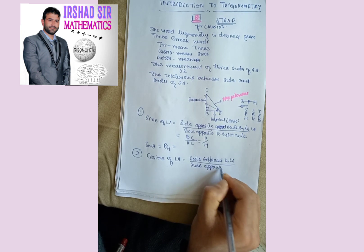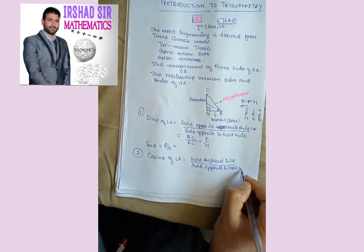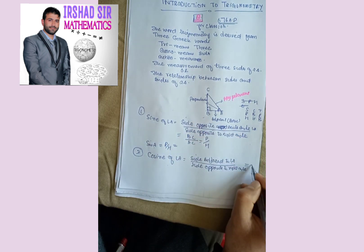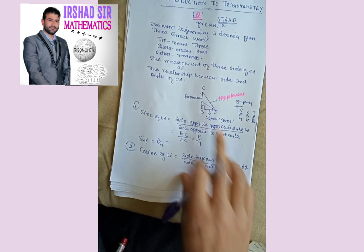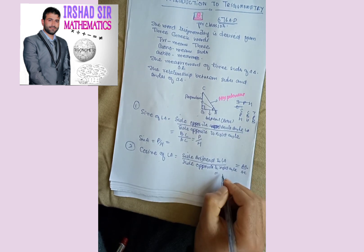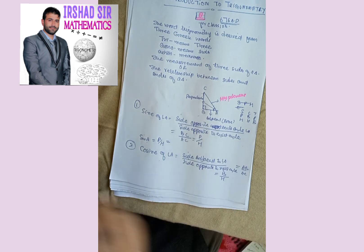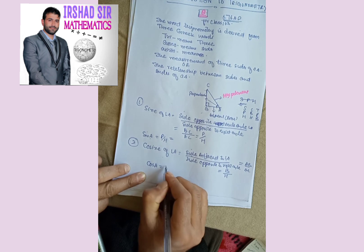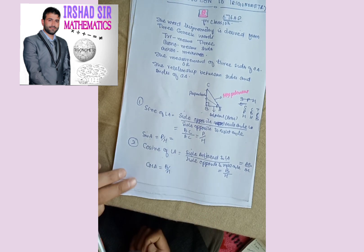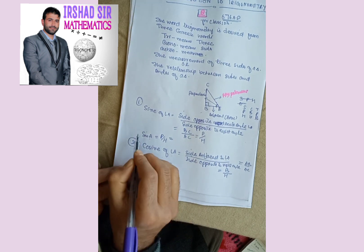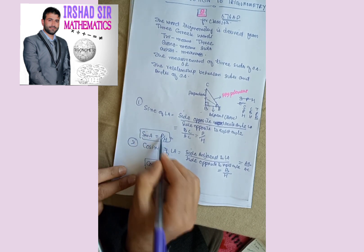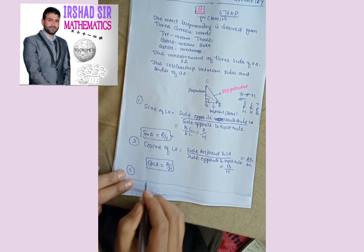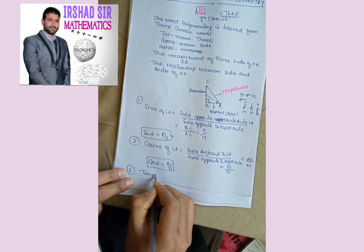Cosine of angle A uses the side adjacent to acute angle A, which is AB, and the hypotenuse AC. So cosine of angle A, abbreviated as cos A, is equal to base by hypotenuse. So: sin A equals perpendicular by hypotenuse, and cos A equals base by hypotenuse.